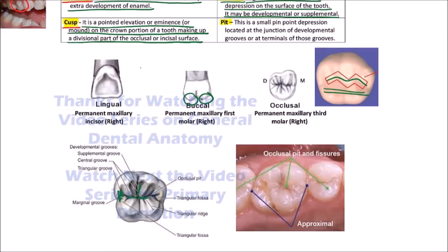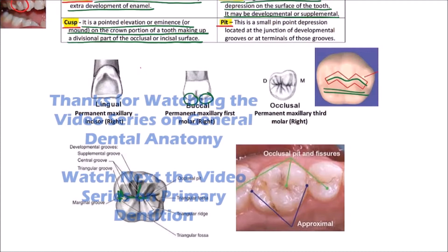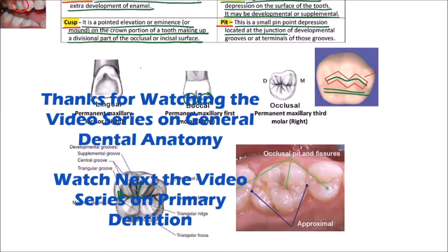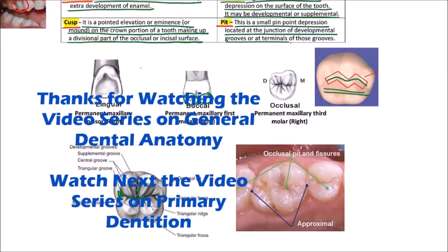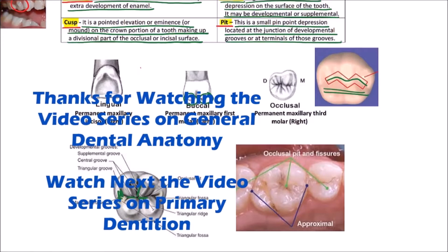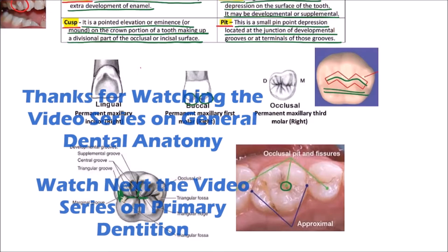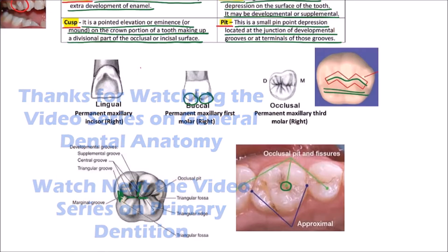Now, the next is pit. A pit is a small pinpoint depression located at the junction of developmental grooves or at the terminals of these grooves. We can observe the occlusal pit here. So, this is an example of pit.